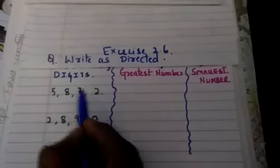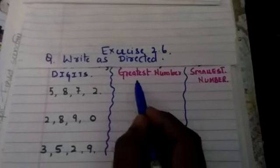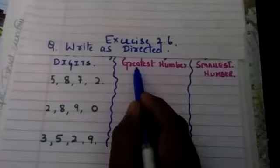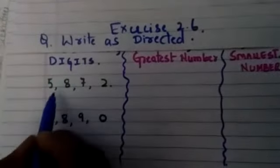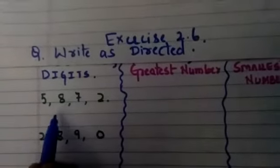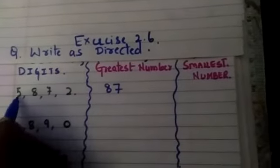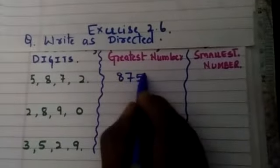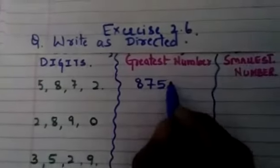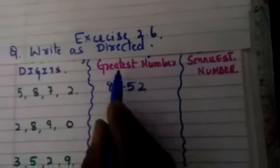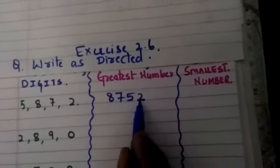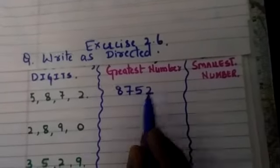So here also what we are doing - we are using these digits and we will make a four digit number which is a greatest or biggest number. Okay, how to do it? Here in these digits which one is bigger? Eight. So we will write here eight. Next one is seven, next one is five, and last is two. Here don't put a comma because we want greatest four digit number.